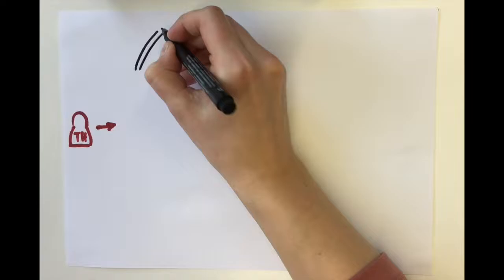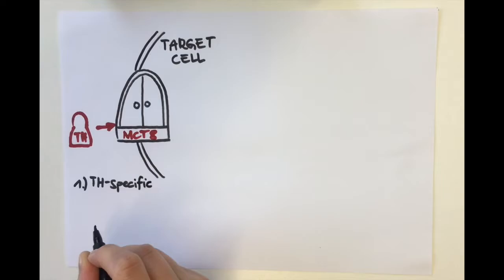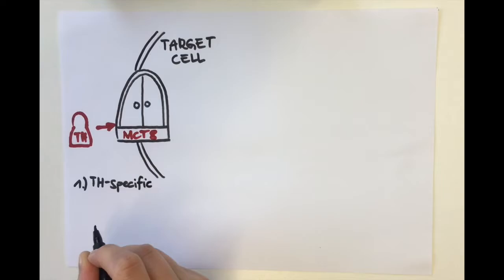The transport of thyroid hormones into their target cells is guided through specific transporter proteins, such as the monocarboxylate transporter 8. In fact, this transporter was reported to be thyroid hormone specific and to import thyroid hormones with a high affinity.